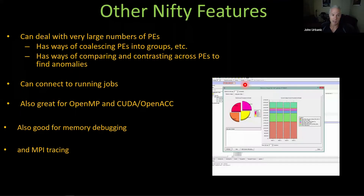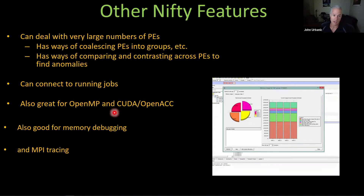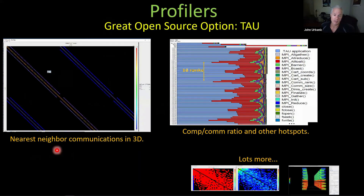DDT has many other nifty features, and TotalView is not completely dissimilar. You can deal with large numbers of PEs, connect to running jobs, and it works well with hybrid codes — MPI plus X. It can do memory debugging and message passing tracing. Tracing messages is useful when figuring out in a complex application where your messages are going. Some free profilers can also do nice message passing tracing.